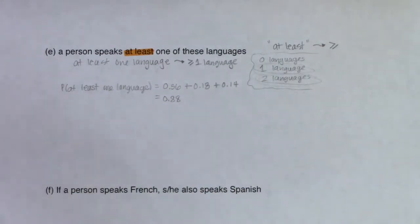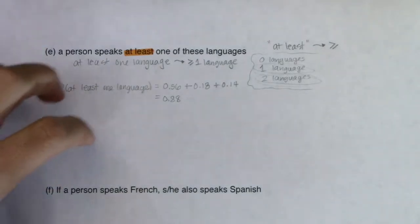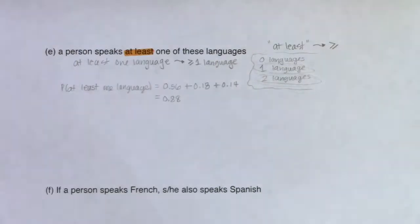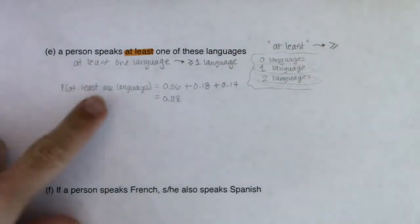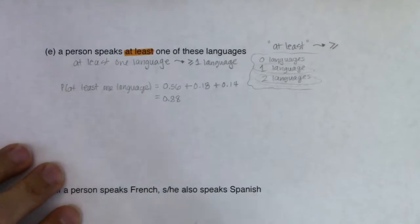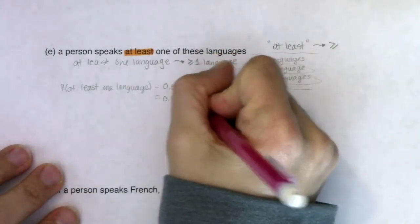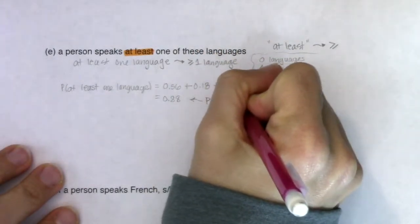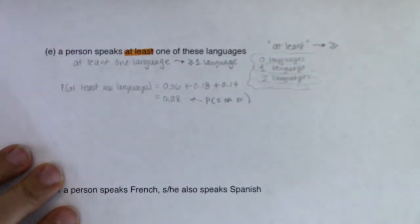Because if you remember, when we first talked about 'ors' in the stats world, when you say 'or,' it means you speak one language or the other language or both. And that's exactly what 'at least one language' means. So this is equivalent — the same as the probability of Spanish or French. We calculated that in Part C. This is the same calculation.